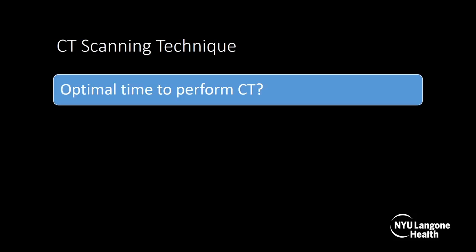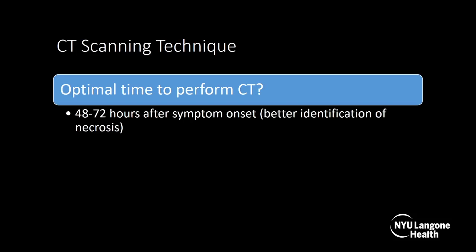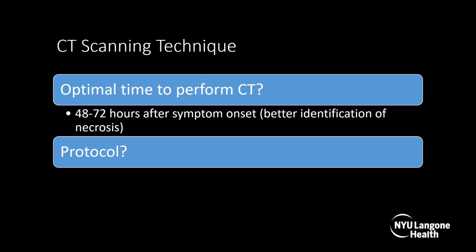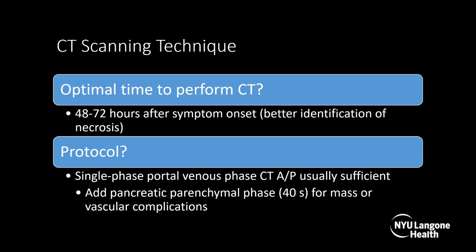Now let's talk about CT scanning technique. What's the optimal time to perform a CT? That's 48 to 72 hours after symptom onset, because that allows for better identification of parenchymal necrosis, which is an important prognostic indicator. Usually a single phase, portal venous phase, abdominal pelvic CT is sufficient, but if there's concern for a mass or vascular complications, then a pancreatic parenchymal phase at 40 seconds would be necessary.